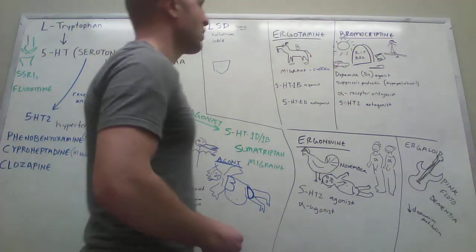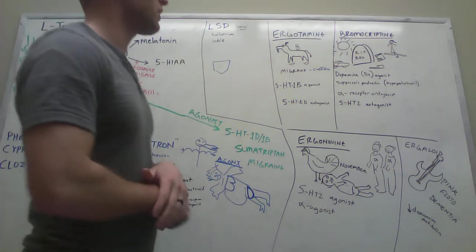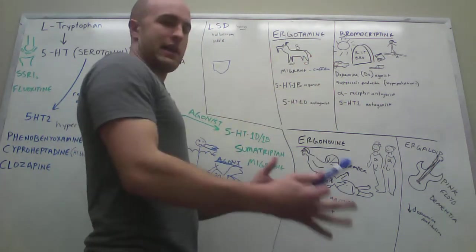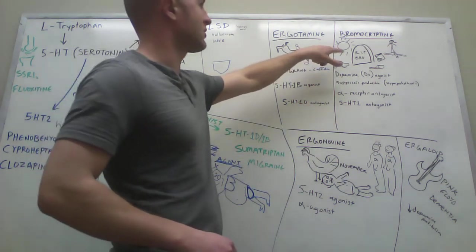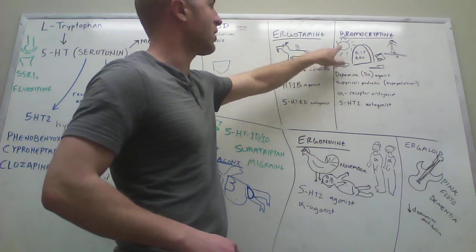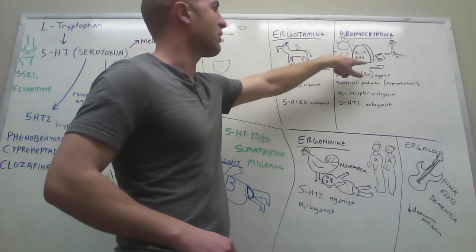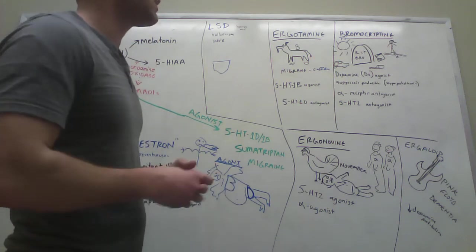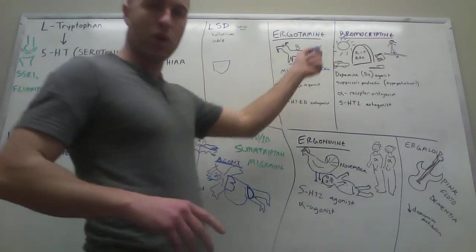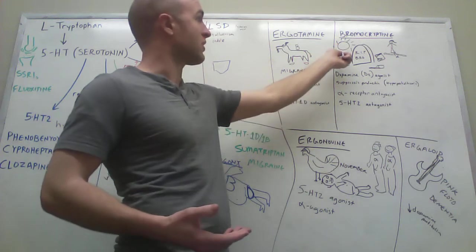Now bromocriptine. A little story here. You got a bro and he died and he's in the crypt. Why did he die? He had Parkinson's. So here's the son and his car parking - Parkinson's. Your bro crypt is here. So what is bromocriptine? Bromocriptine is used to treat Parkinson's.